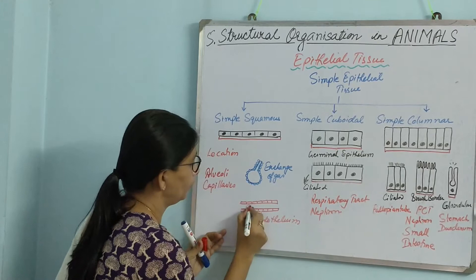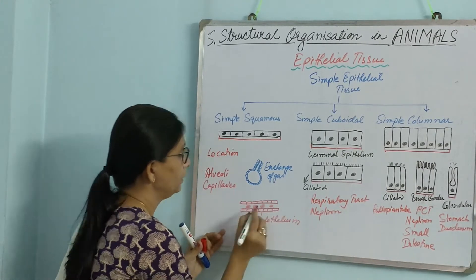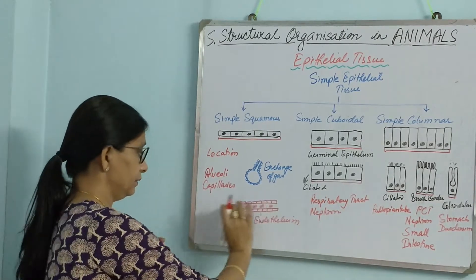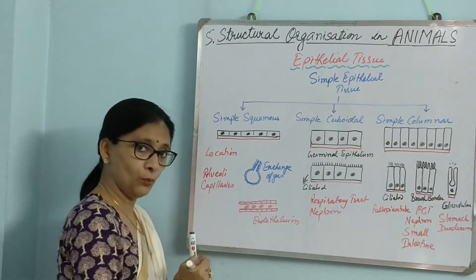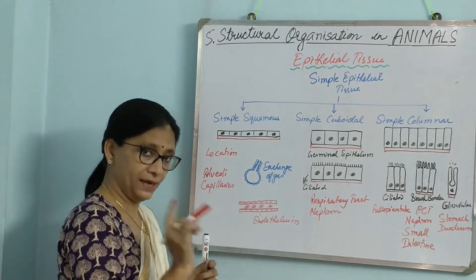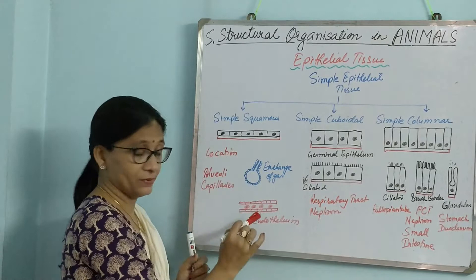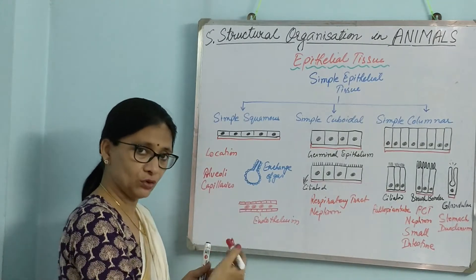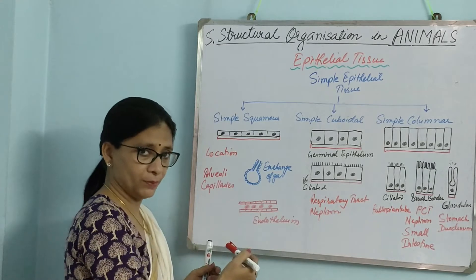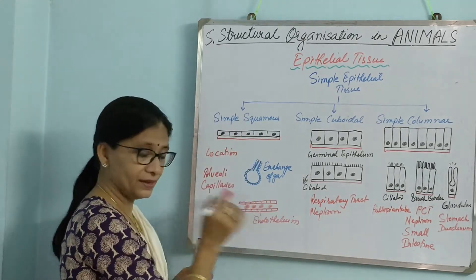Here blood cells are moving. This side is artery, this side is vein. They have a few more layers of cells, but the capillary will have just one layer of endothelium, and this is simple squamous. Here again the purpose is exchange of gas and food stuff. So if it is thick, exchange will not be able to take place. So they are made up of simple squamous epithelium.